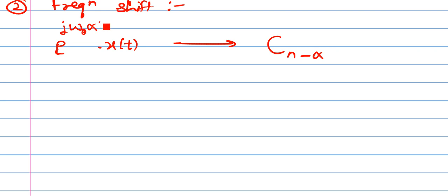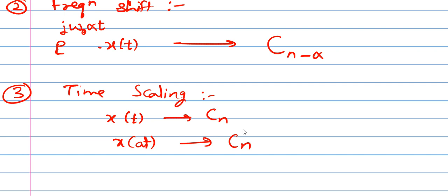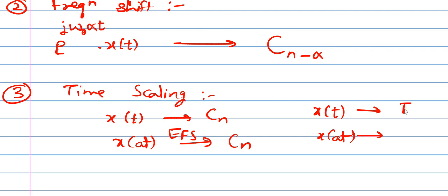One important observation: in frequency shift, the exponential and the shifting have opposite signs — here plus, then here minus. The factor is j-omega-0-alpha-t. Property 3 is the time scaling property. If X of t has Fourier series coefficient Cn, then X of at also has coefficient Cn — there is no change. However, if X of t has time period T, then X of at has time period T divided by a, because compression reduces the time period.